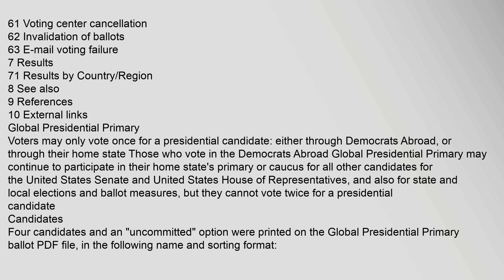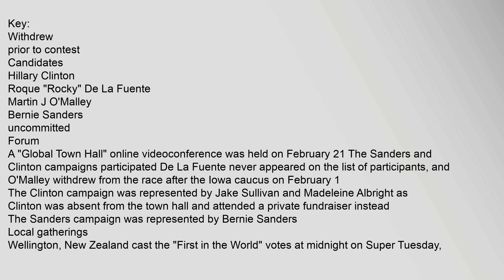Four candidates and an uncommitted option were printed on the global presidential primary ballot. The candidates, listed alphabetically, were: Hillary Clinton, Rocky De La Fuente, Martin J. O'Malley, and Bernie Sanders, plus an uncommitted option. A global town hall online video conference was held on February 21st. The Sanders and Clinton campaigns participated. De La Fuente never appeared on the list of participants, and O'Malley withdrew from the race after the Iowa caucus on February 1st. The Clinton campaign was represented by Jake Sullivan and Madeleine Albright.